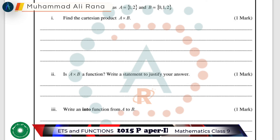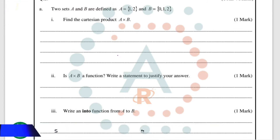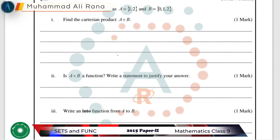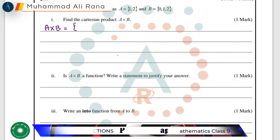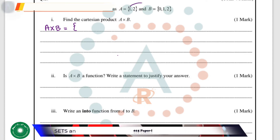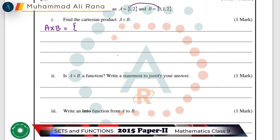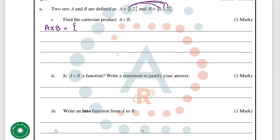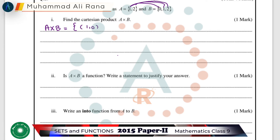First of all, we have to find the Cartesian product A cross B. In the Cartesian product, we form ordered pairs of each element of the first set with each element of the other set. The first three ordered pairs will be (1,0), (1,1), and (1,2).